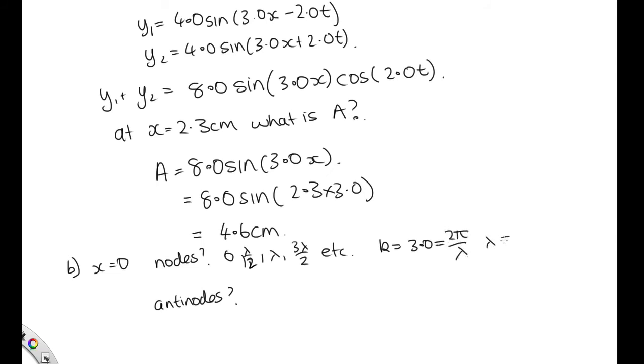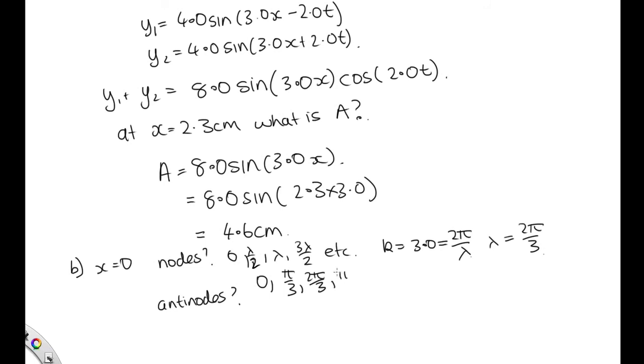Lambda equals 2π over 3. The nodes occur at 0, at half of this which is π/3, at 2π/3, at 3π/3 which is π. Generally, at nπ/3 where n is any integer.